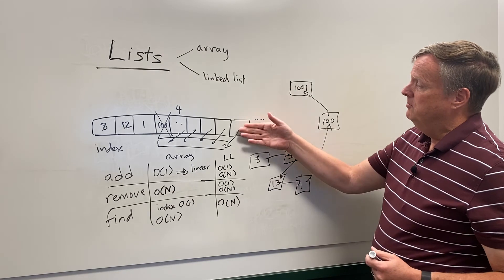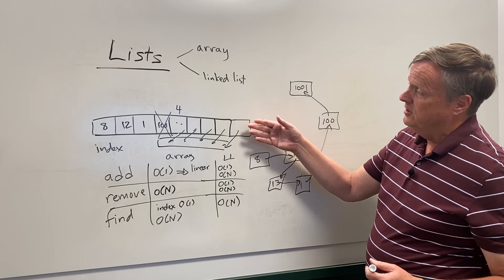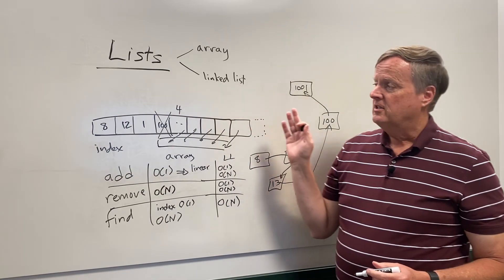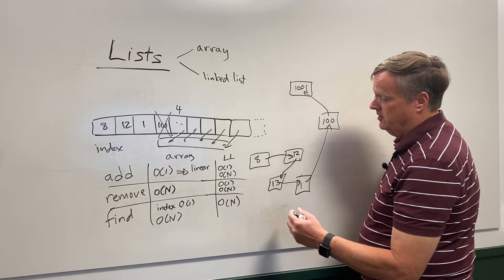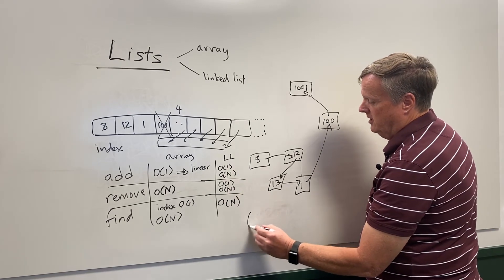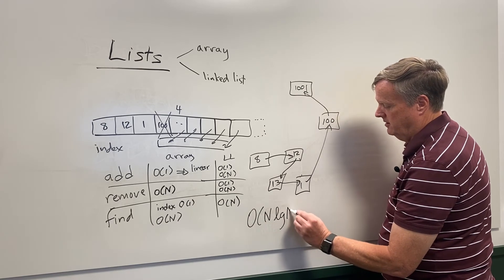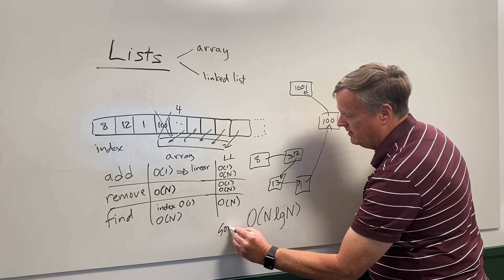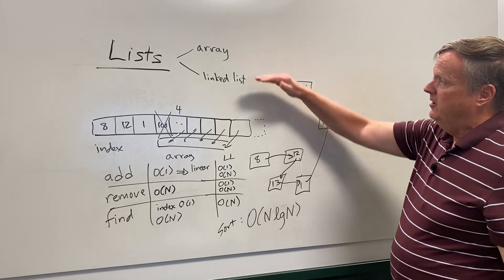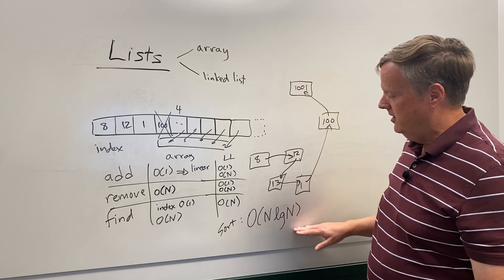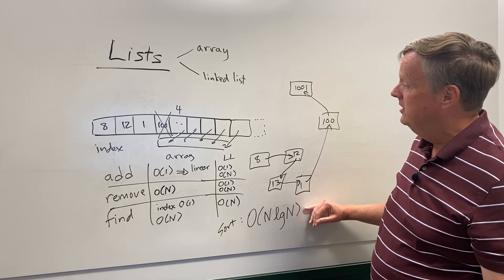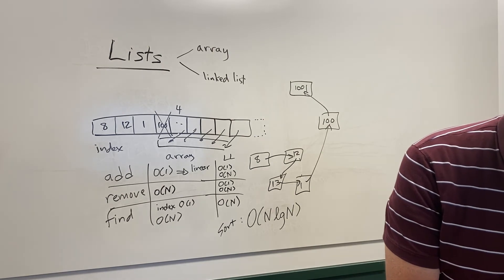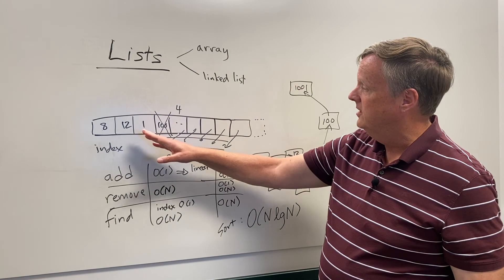You don't usually see interview questions asking the particulars of how sorting works, but you do need to know how expensive it is. The typical array sort algorithm — like quicksort — runs in O(n log n) complexity. That's where we see n log n come up a lot. So if you have an array of items and you need to sort them, remember: that's an O(n log n) operation.